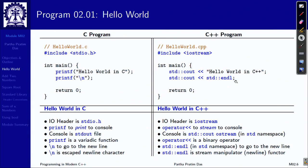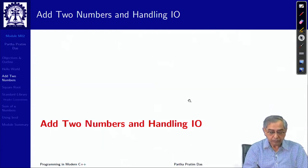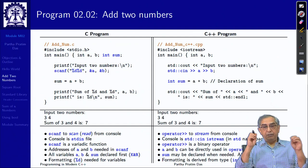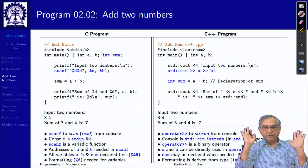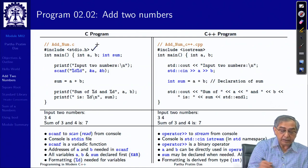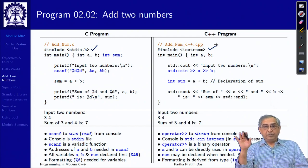Let us go to the next example: adding two numbers and handling IO. We want to read two numbers from input, add them, and write their sum — a sample program you must have written many times in C. The input/output library is different, as we have already observed.